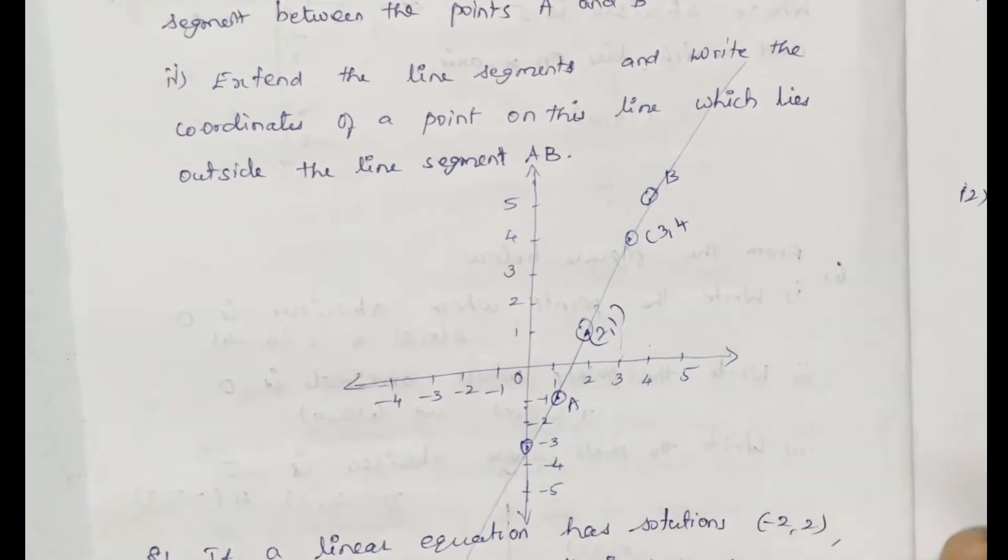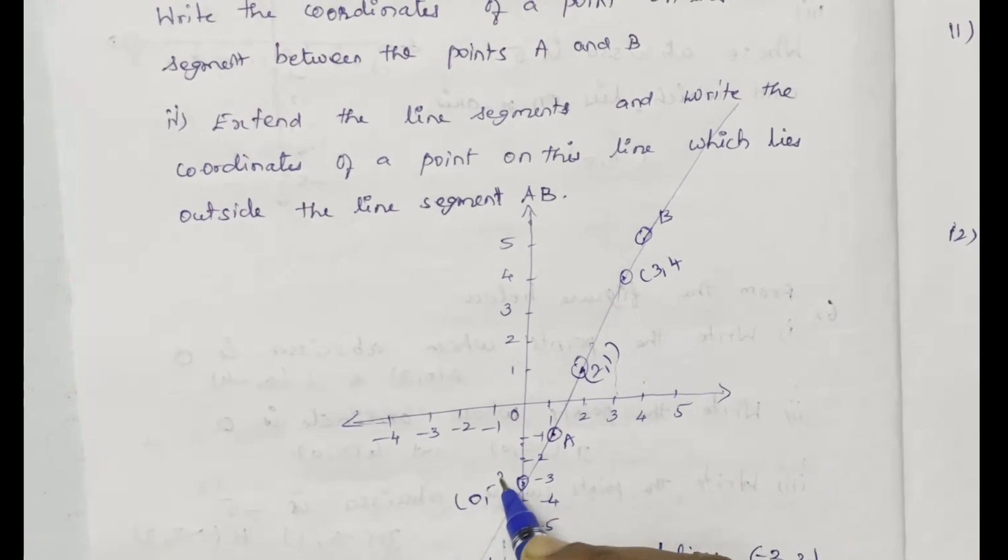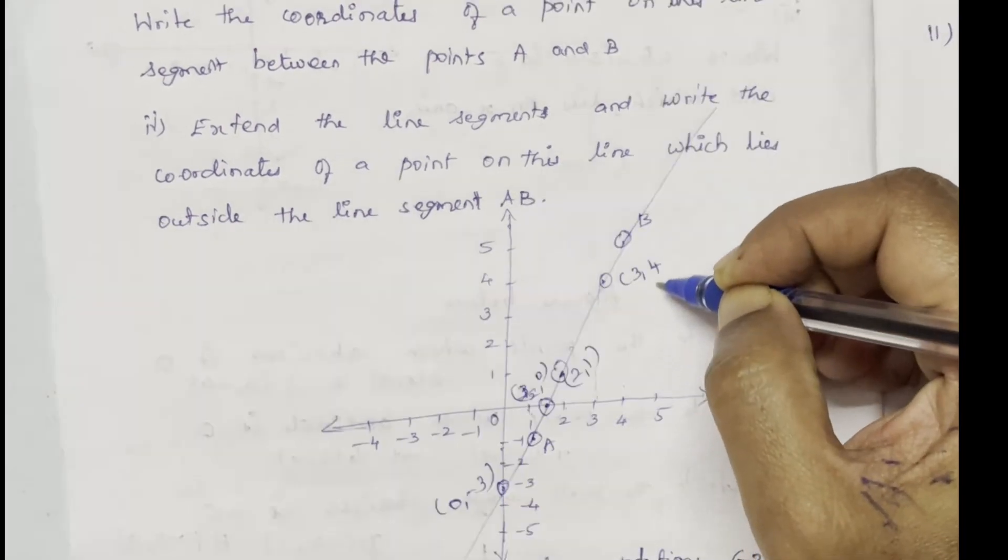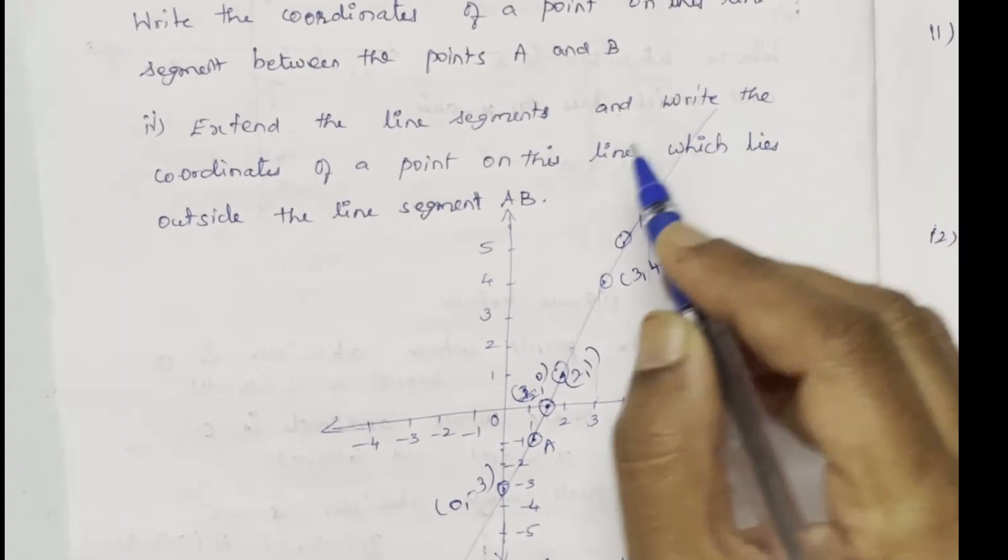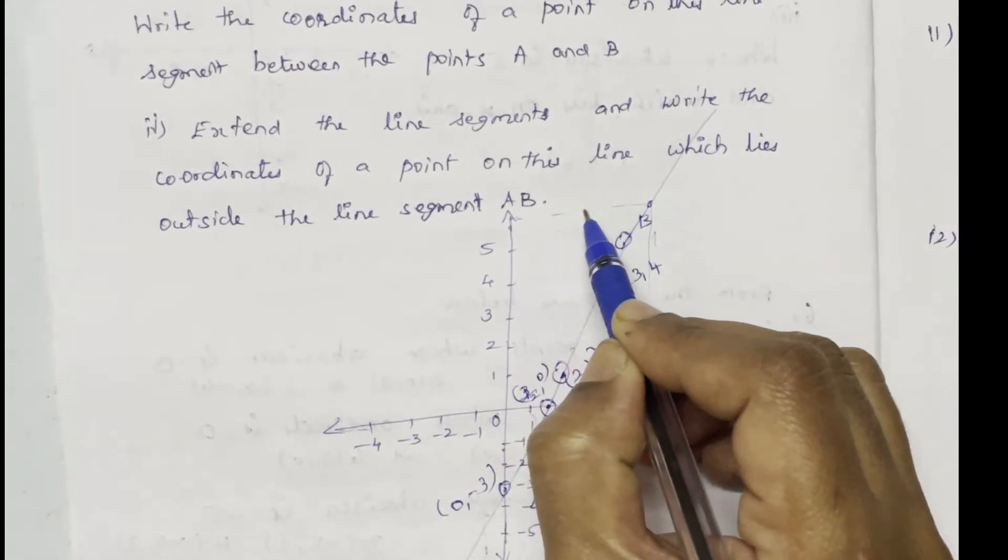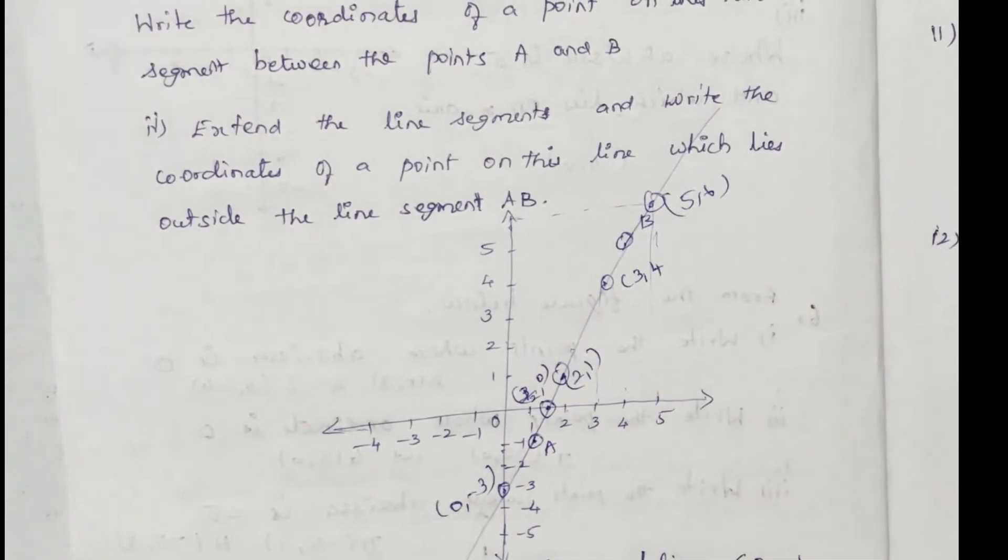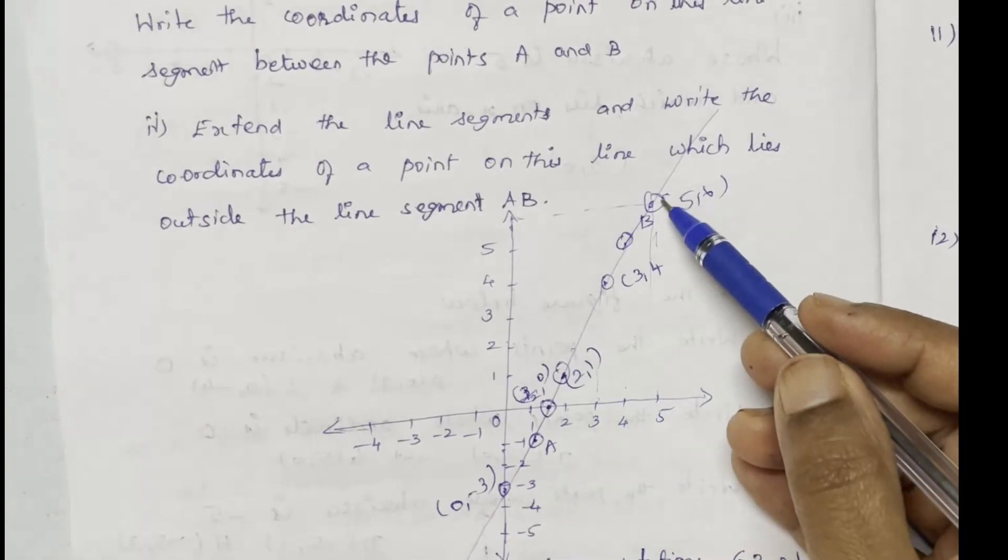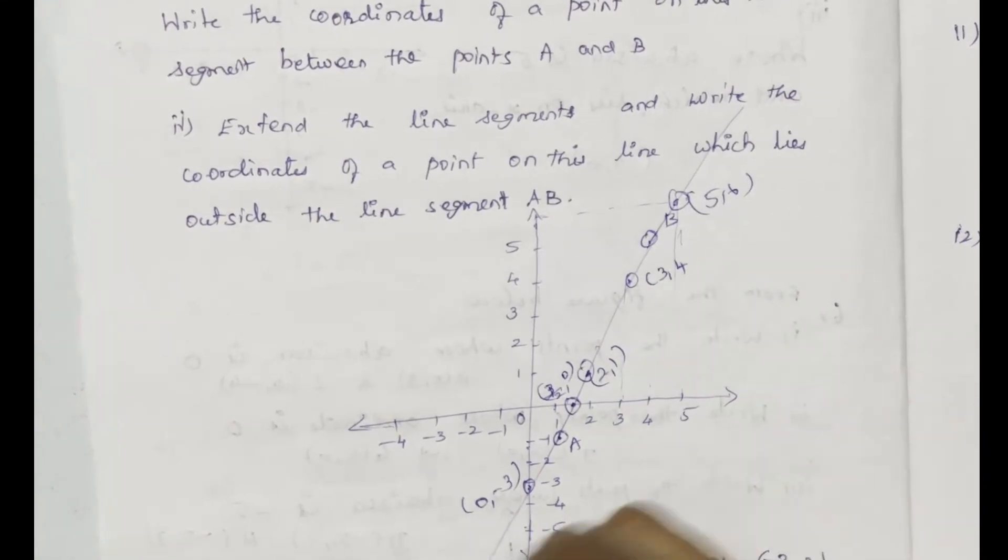Now, there are 3 points. 0, minus 3. So, this is the point 6. This is 5, 6. Now, it's outside of AB. This point, this point, this is outside of AB. These two points are inside of AB.